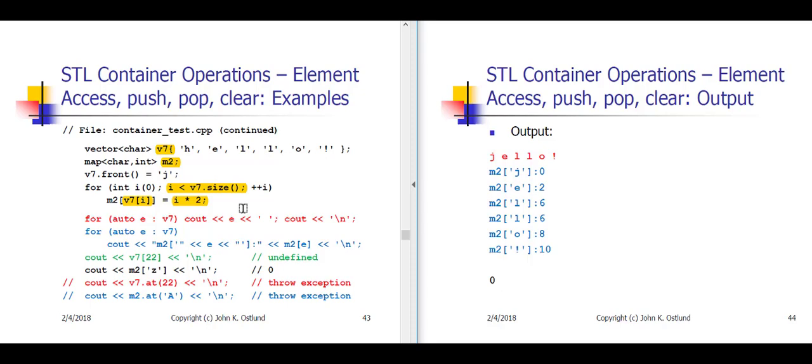Notice that the fourth time through the loop, i's value is 3 and v7[3] is little 'l' again. Because the 'l' key already exists in m2, this is not going to create a new pair. What I get back is a reference to the value part of the pair whose key is 'l'. That value part currently contains a 4 — that is the 2 times 2 stored in the previous iteration — but now I'm going to replace that 4 with a 6. So m2['l'] is now 6.